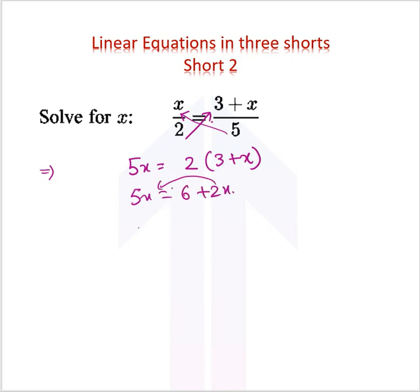So just bring 2x to the left side. We get 5x minus 2x because when it goes to the other side the sign changes. 5x minus 2x is 3x is equal to 6.